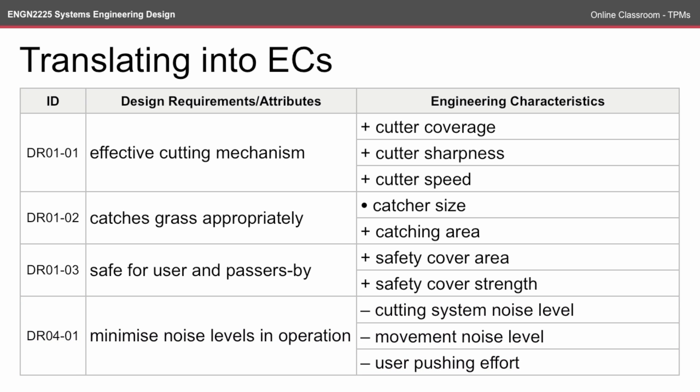So notice that the four design attributes have been translated into 10 engineering characteristics. Perhaps they could have been broken up even further, but this is a good start.